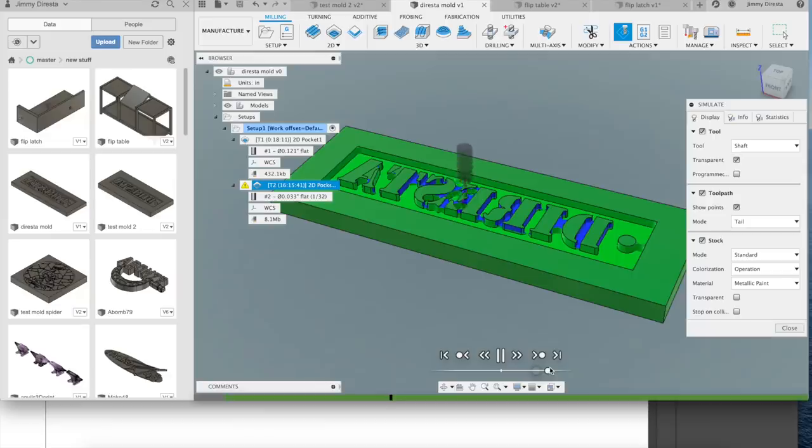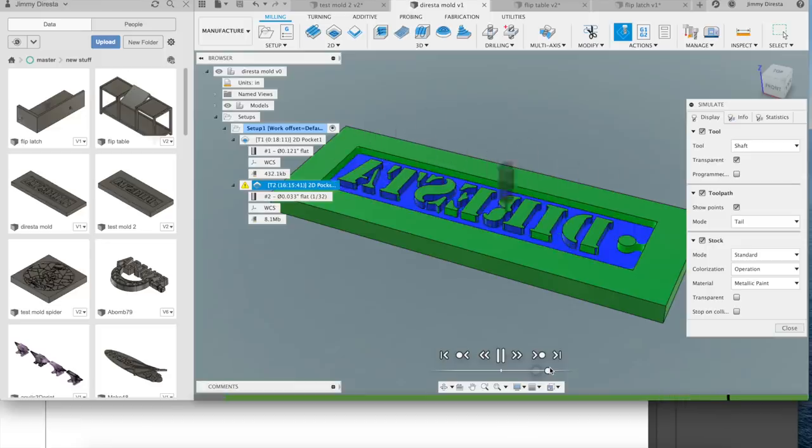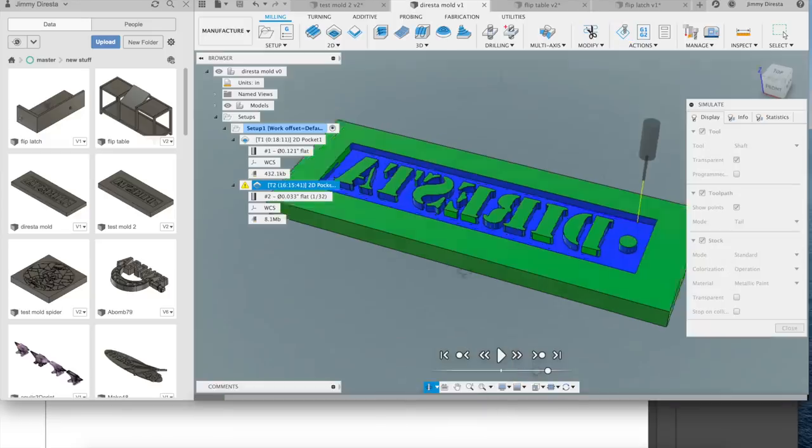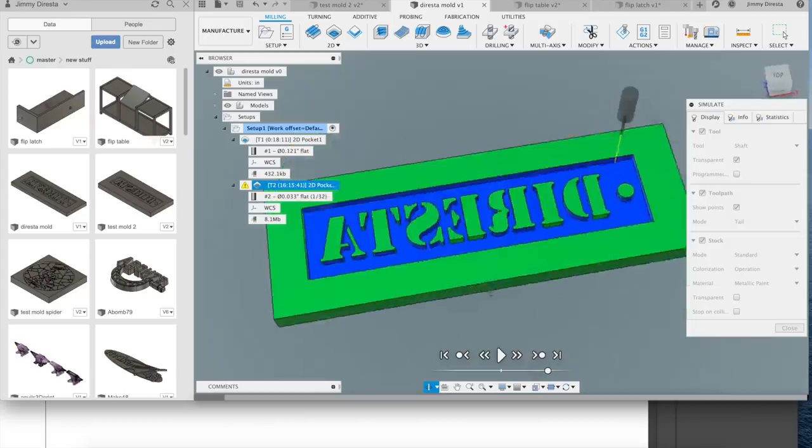You see the second milling operation in Fusion—it's called the rest milling, meaning it mills out everything after the initial clearing. That's done with that 1/32nd bit. This took 30 hours of milling. I'm not going to show you 30 hours of milling, but I'm showing you the simulation in fast forward so you could see what it actually did.